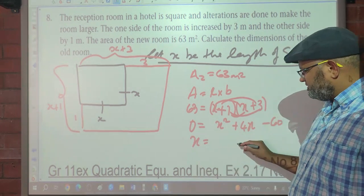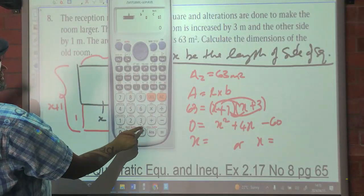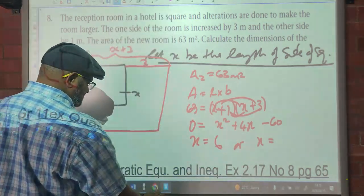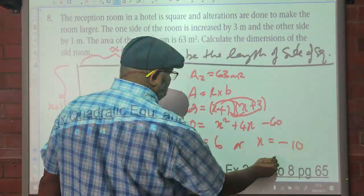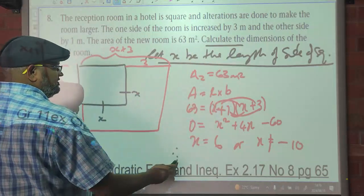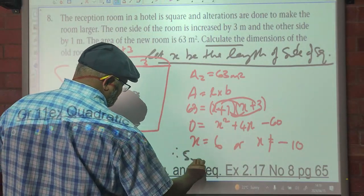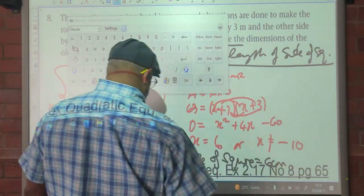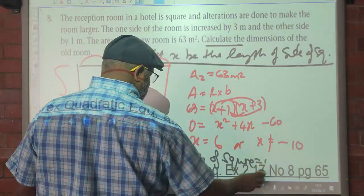So X equals — using factors, the quadratic formula, the calculator, or completing the square with values 1, 4, and negative 60 — gives X equals 6, and the other value X equals negative 10. Since a length can't be negative, we exclude that. Therefore X equals 6 meters — the side of the square is 6 meters.